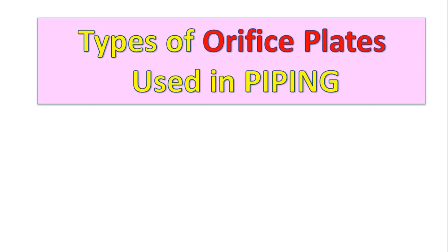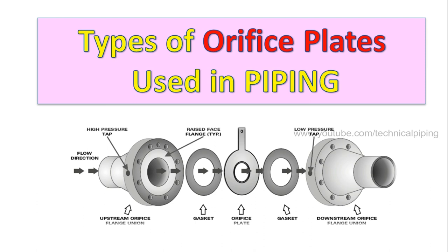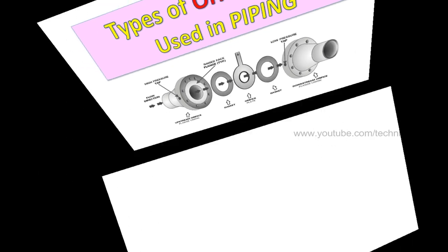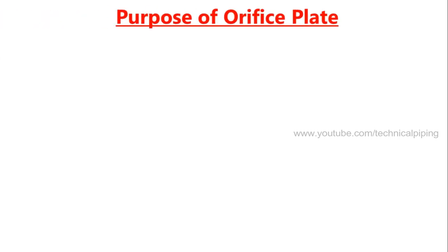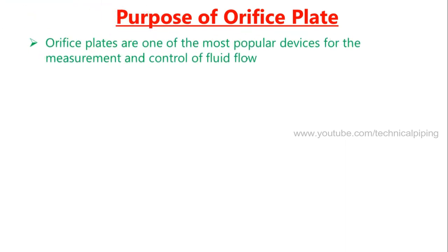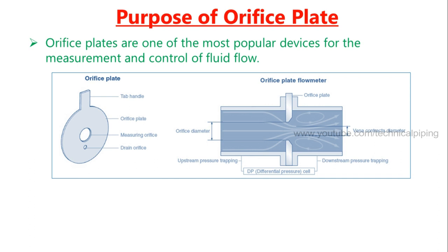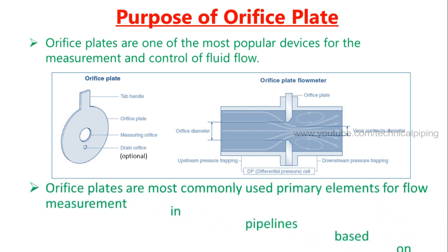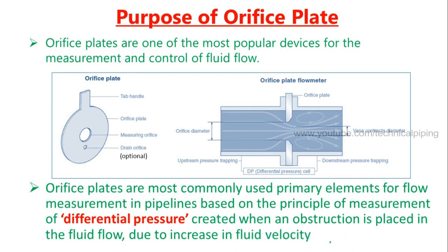Welcome to the Technical Piping YouTube channel. In this video, we explain the types of orifice plates and their usage in piping systems. Orifice plates are one of the most popular devices for the measurement and control of fluid flow, and are the most commonly used primary elements for flow measurement in pipelines, based on the principle of differential pressure created when an obstruction is placed in the fluid flow.